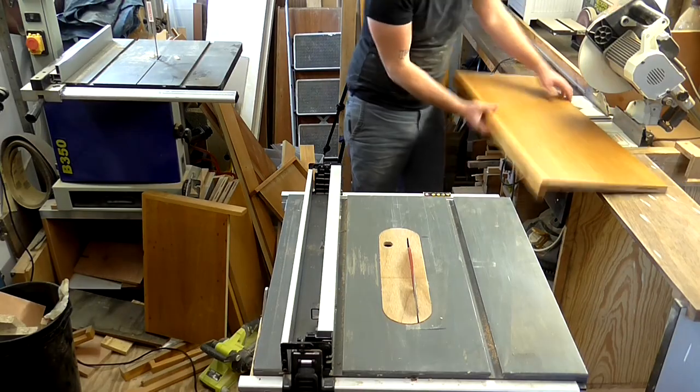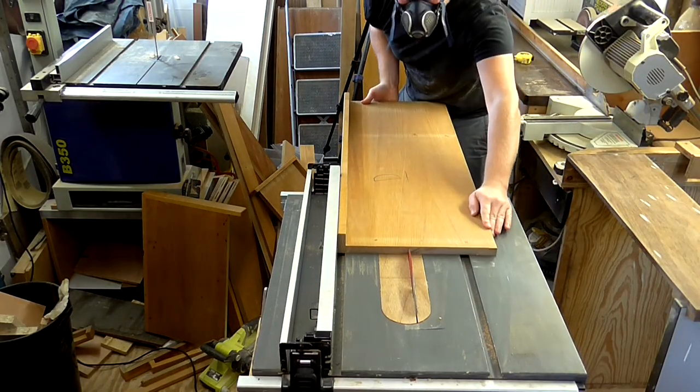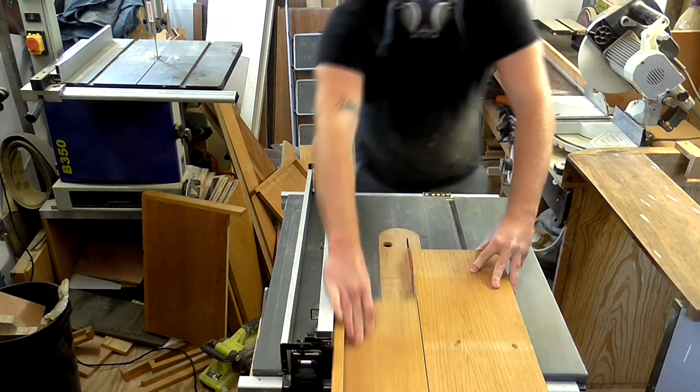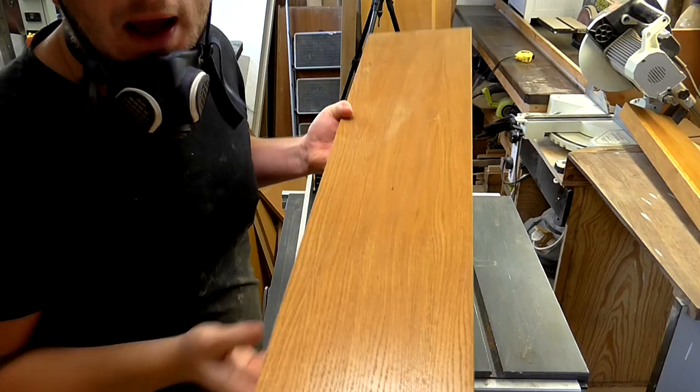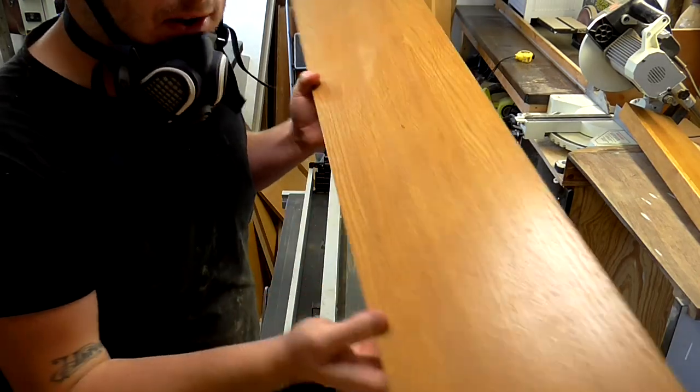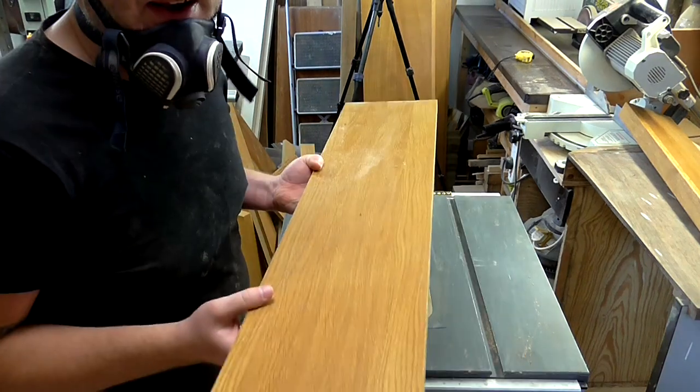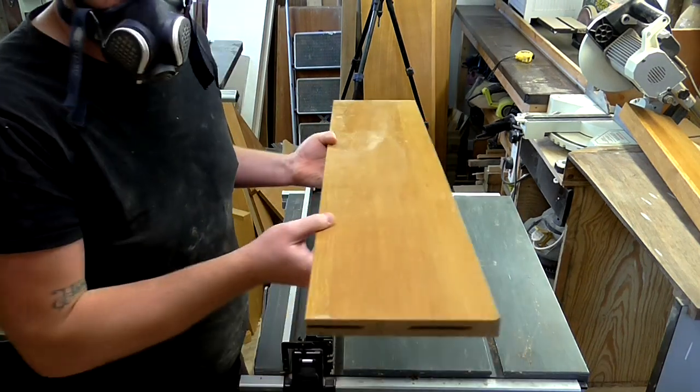Now I'm going to rip the top shelf to the right depth on the table saw. And with the offcut from that last cut, I'm going to make the back piece that will have the hooks on, and I'm going to rip this to the same width as the last piece.